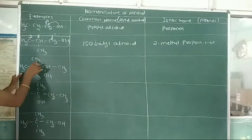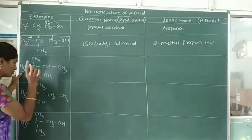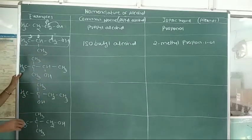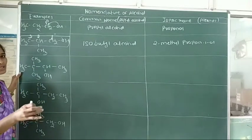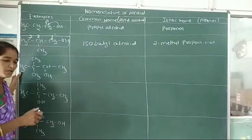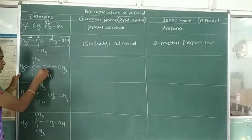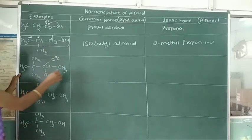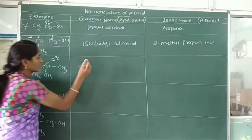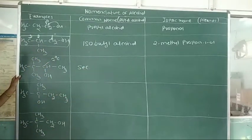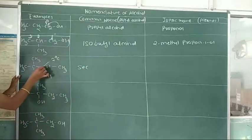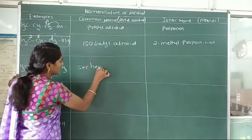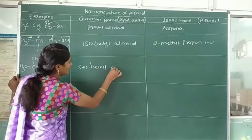Next example: CH3C(CH3)(CH3)-CH(OH)-CH3. In this example, the hydroxy group is attached to which carbon atom — primary, secondary, or tertiary? Here the hydroxy group is attached to a secondary carbon atom. This is a secondary carbon atom. Using the prefix 'secondary', with 1, 2, 3, 4, 5, 6 carbon atoms — the name of the alkyl is hexyl. So the common name is secondary hexyl alcohol. This is an example of a secondary alcohol.